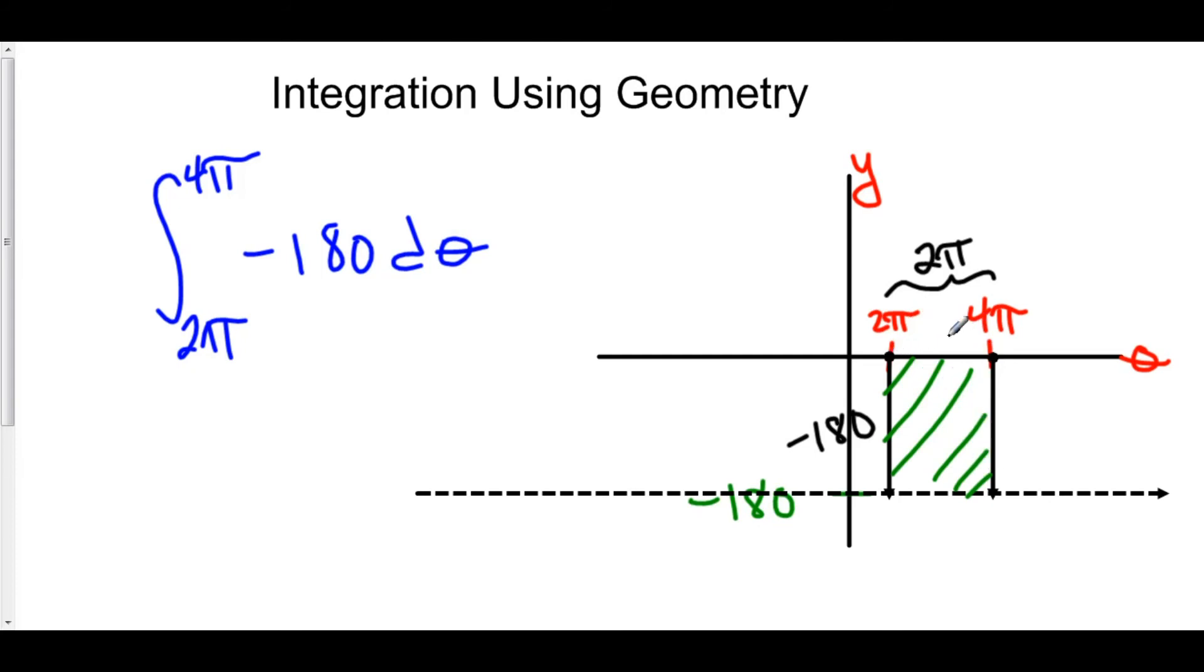we have a positive length, 2π to 4π, and we have a negative length, negative 180. Positive times a negative is a negative. And indeed, the area of this rectangle right here is negative because it's below the theta axis.